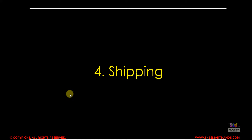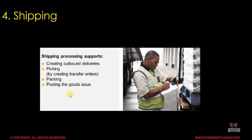Once goods are ready, we create a document called an outbound delivery in the system. Then picking starts — which can be done without warehouse management, or if the company uses the WM or EWM module, a transfer order is created as part of picking. After picking, packing happens, and once goods are ready, we post the goods issue, meaning the goods are on their way to the customer via truck or whatever transport.